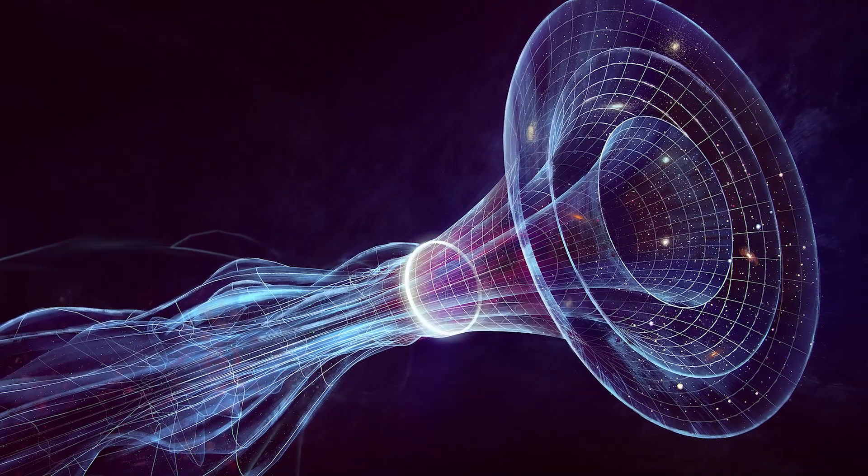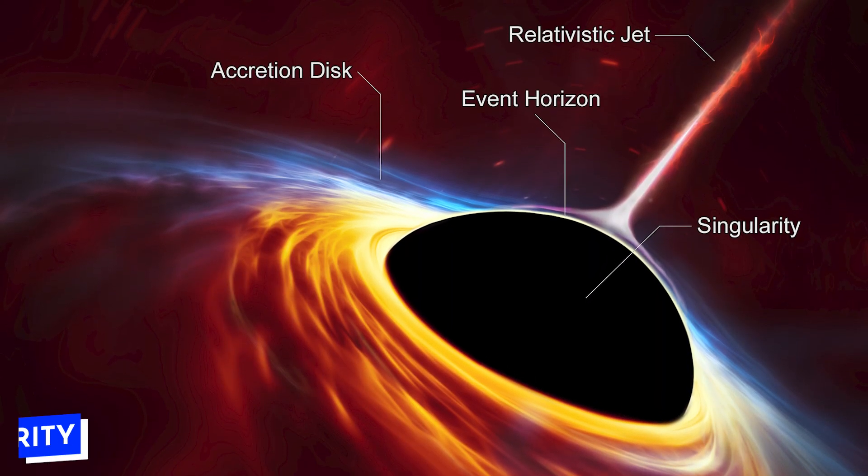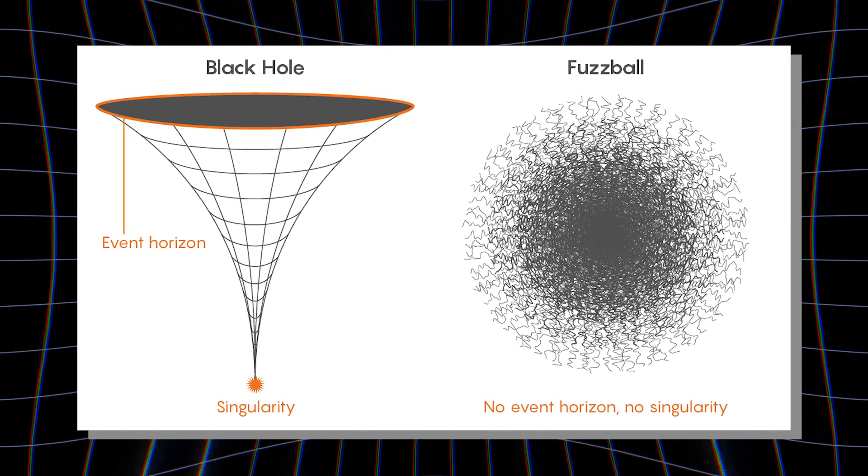But what's really at the center of a black hole? Scientists called it a singularity, a point where density and gravity go to infinity. It's a mind-boggling concept and honestly, still a bit of a mystery in science.